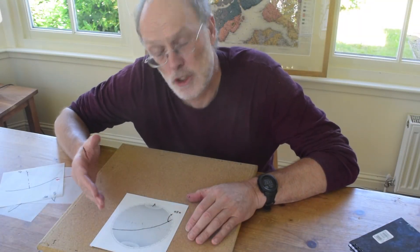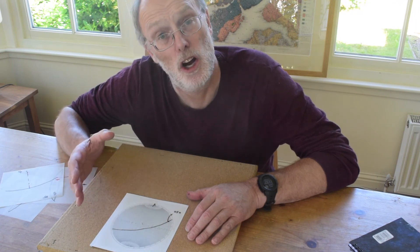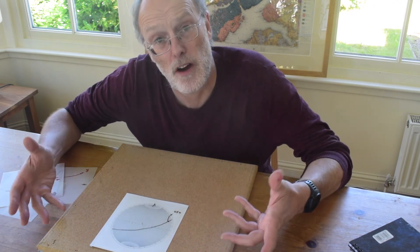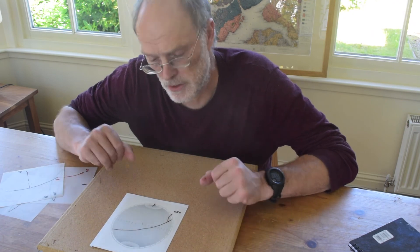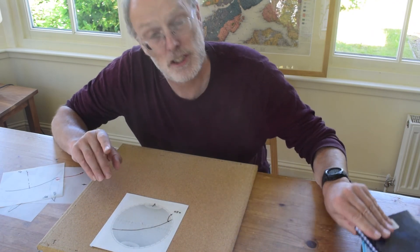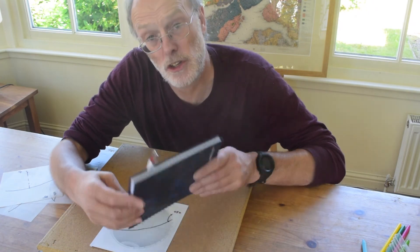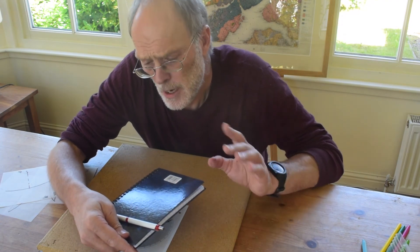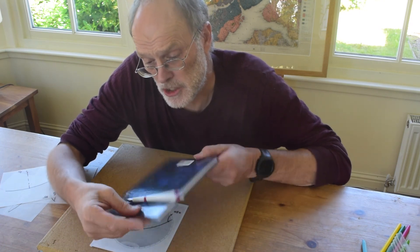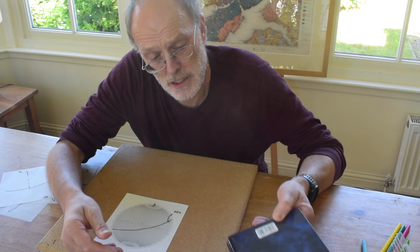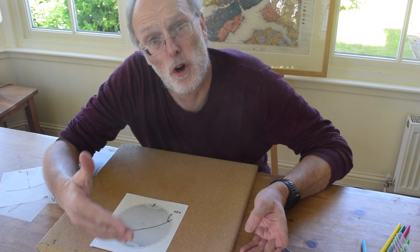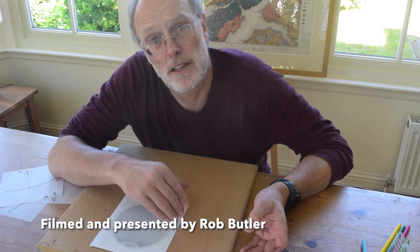That's three examples of how to untilt paleocurrents and restore them to their original orientation — the orientation we need to understand the environments and flow directions at the time of deposition. The method is really powerful for simple tectonic reconstructions involving simple tilting, and in many cases that's fine. But in some situations the deformation involves more than just rotations around the strike orientation of the bedding. In the next video we'll look at how we can modify these techniques for those more complicated situations.